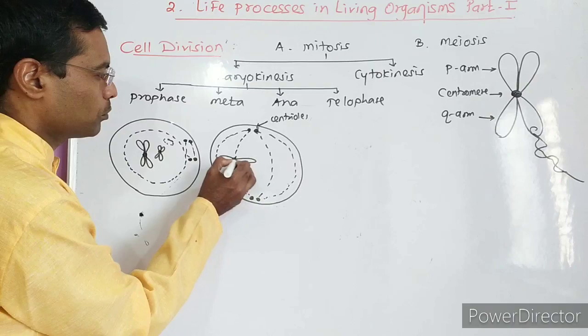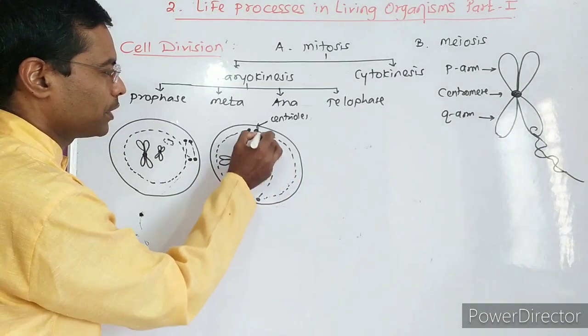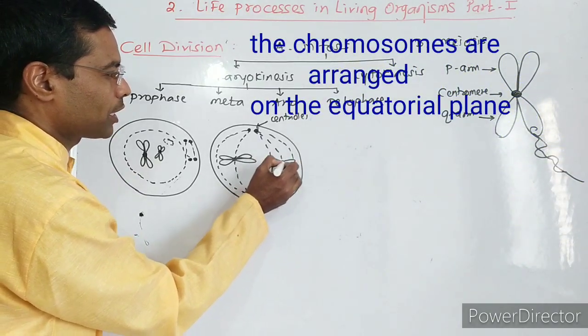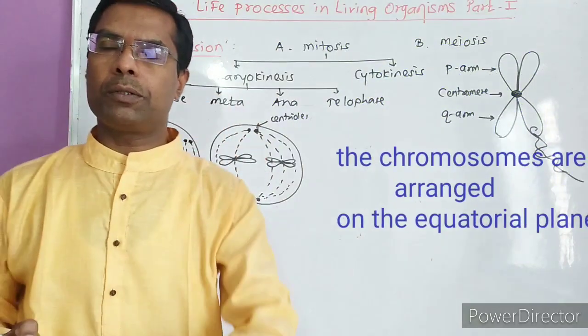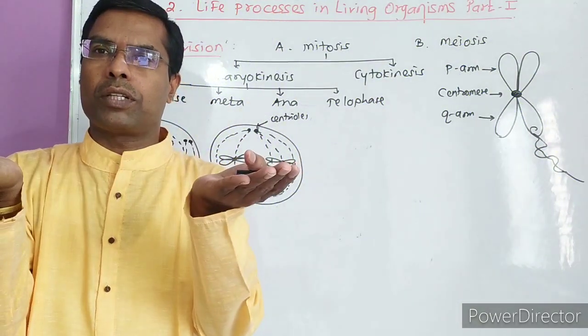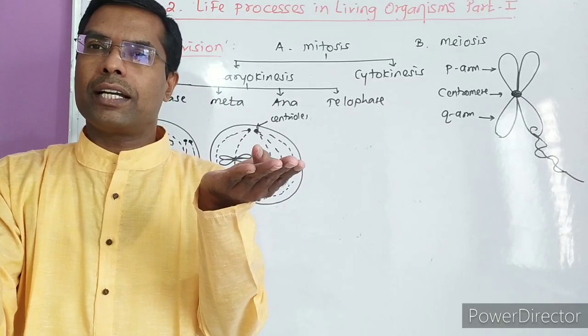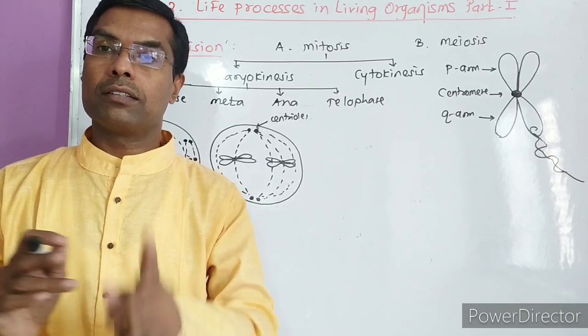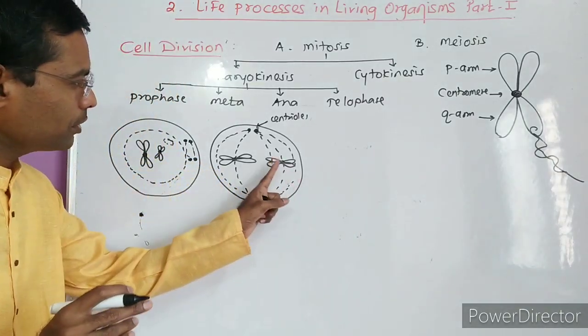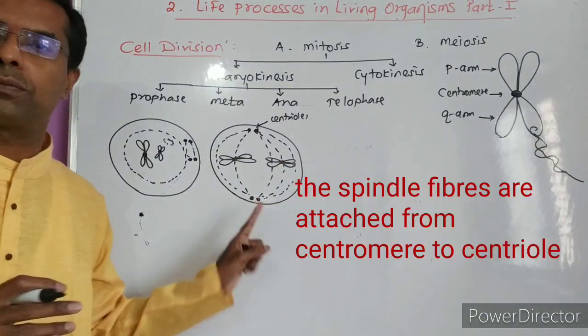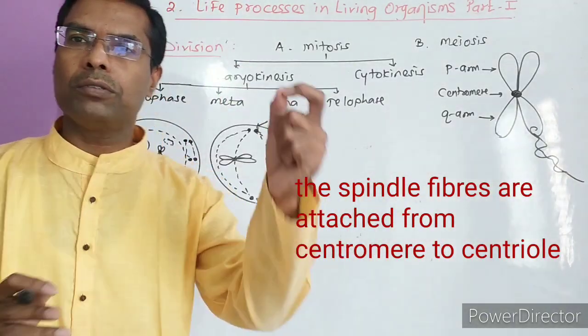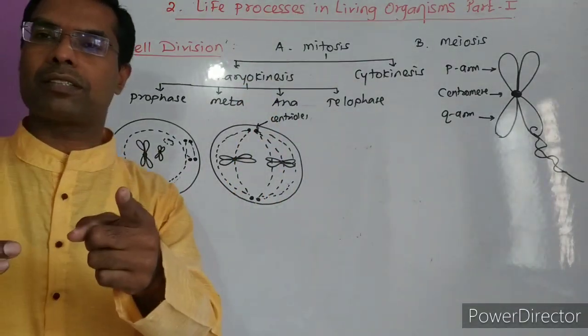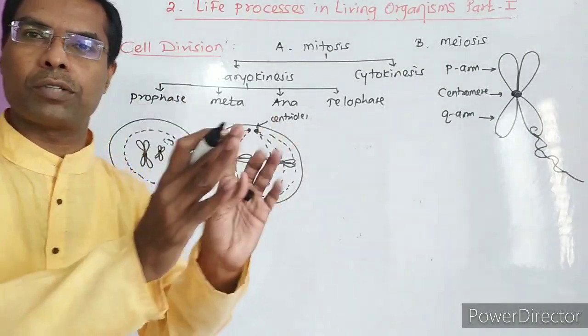In metaphase, the chromosomes are now on the equatorial plane, or parallel to the equatorial plane. Equator means the middle part of the cell. The chromosomes are arranged parallel to the equator. The spindle fibers are attached from centromere to centrioles. This is metaphase - its characteristic is chromosomes arranged parallel to the equatorial plane.